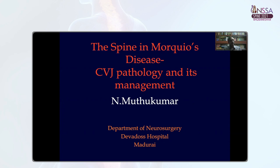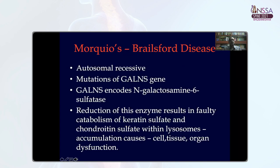Today I'll be focusing on the craniovertebal junction pathology in children with Morquio Disease. Morquio Disease is an autosomal recessive disease due to mutations of the GALNS gene, which encodes N-acetylgalactosamine-6-sulfatase. The reduction of this enzyme results in faulty catabolism of keratan and chondroitin sulfate, both of which accumulate in tissues and organs leading to dysfunction. Since keratan and chondroitin sulfate constitute a significant portion of extracellular matrix and cartilage, children with this disease tend to have significant skeletal dysplasia.